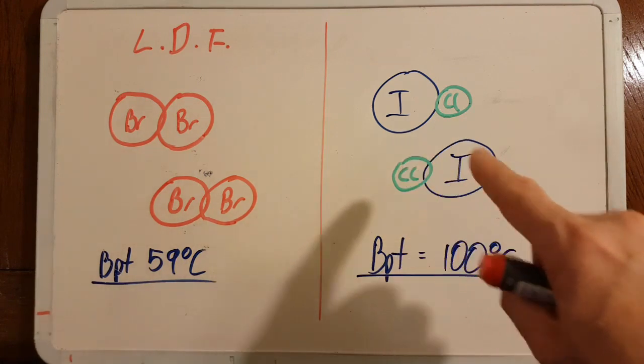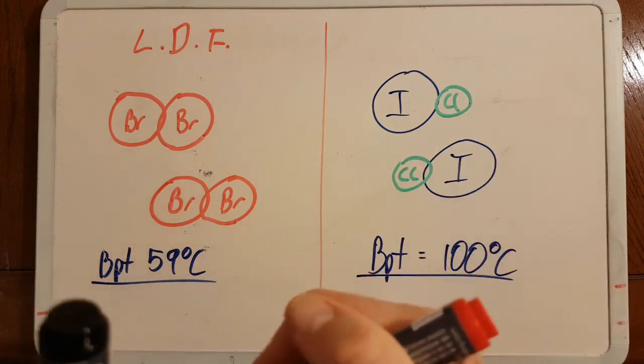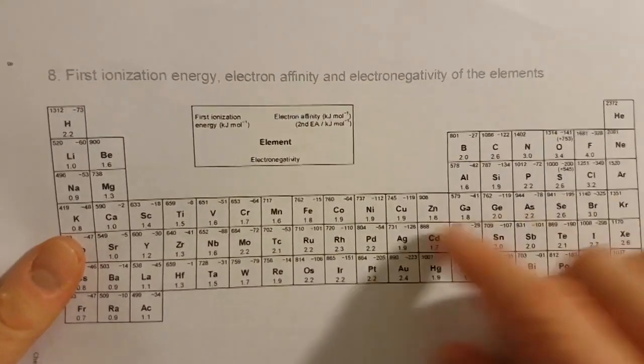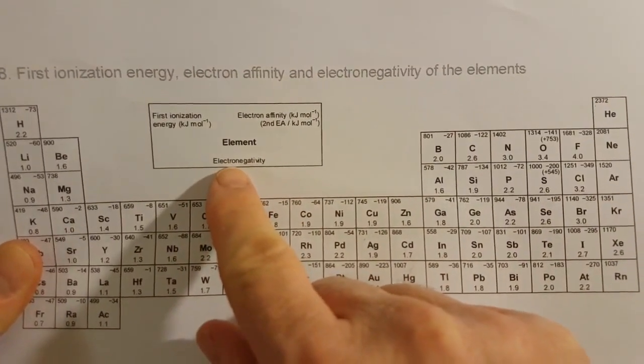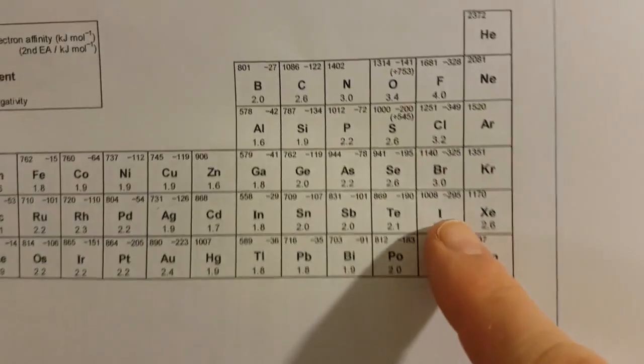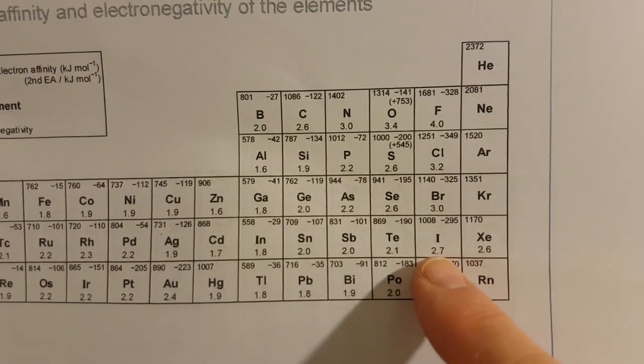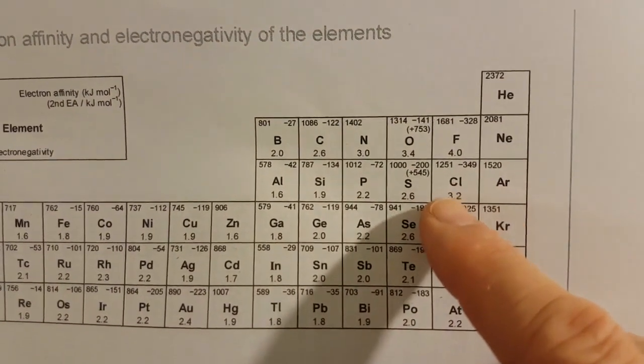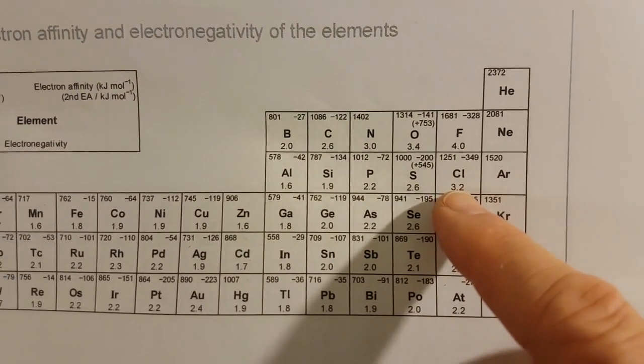Over to iodine monochloride: this has a permanent dipole. One side of this molecule is always going to be a little bit more negative than the other. Looking at the beloved IB data booklet, electronegativity is the bottom number.